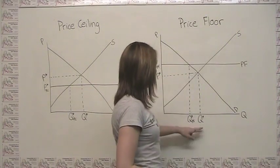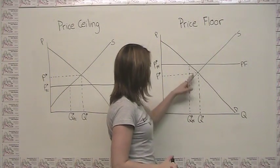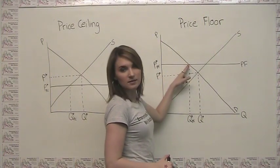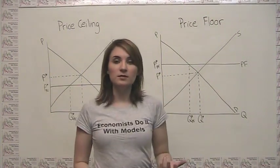With the price floor, your equilibrium quantity transacted goes down because your limiting factor is demand. But in either case, in terms of quantity, we see that same outcome.